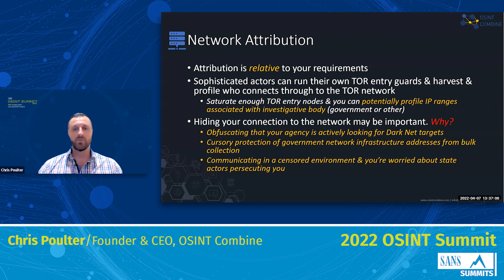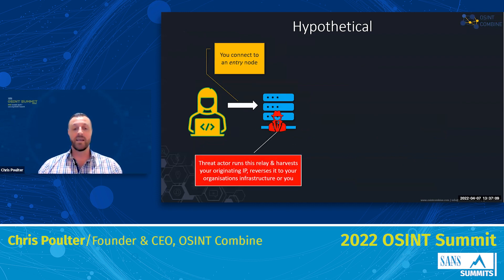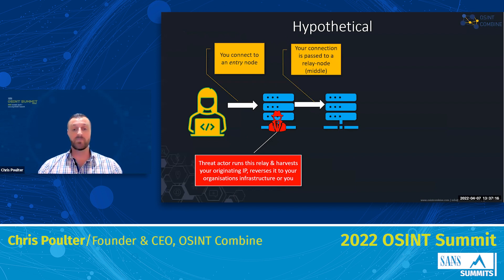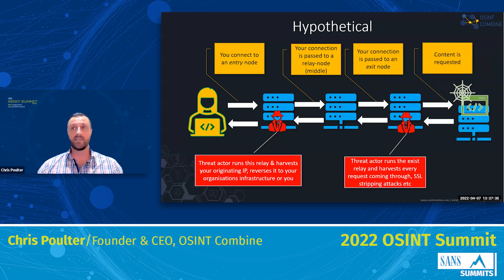Third time we'll see this graphic — a hypothetical: you connect to the entry node, the threat actor runs the relay and harvests your originating IP address, reversing that to your organization's infrastructure. Then the exit node: threat actor runs an exit relay and harvests every request coming through. They might do what's called an SSL stripping attack — changing HTTPS and replacing it with HTTP and listening into your traffic. That's obviously relevant if you're accessing services like email and Facebook, which you shouldn't be doing on the dark net.